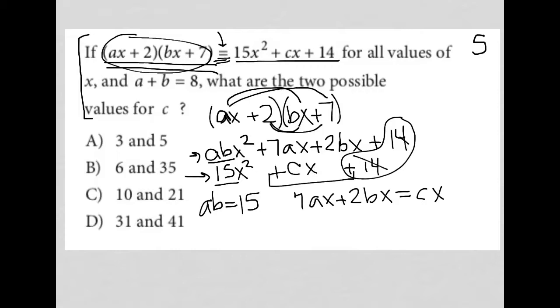So let's think about ab equaling 15. Well, how could that happen? There are a few ways. However, we do have some information here in the question telling us that a plus b equals 8, which then that limits the ways in which we get a times b to equal 15. So either a is 3 and b is 5, or the exact opposite, a is 5 and b equals 3. So those are our options for a and b.